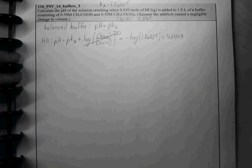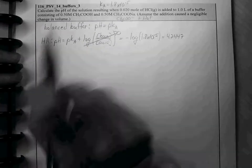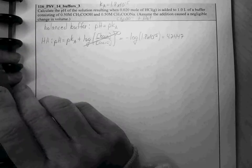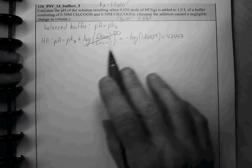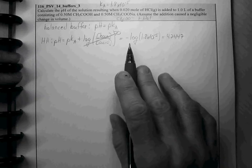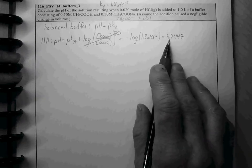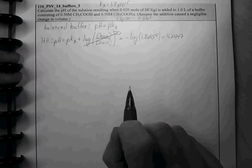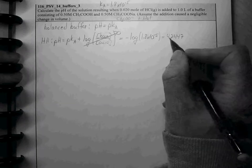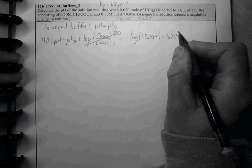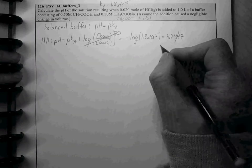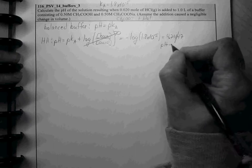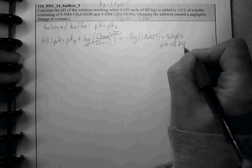Now, in terms of sig figs, two sig figs here in our Ka and in our concentration, so we want two sig figs in our answer. Remember, when you take the log of a number, in the result, the only decimals that count towards sig figs are those after the decimal point. So, if we have two decimals after the decimal point, we can round that off. Our initial pH is 4.74.